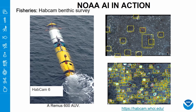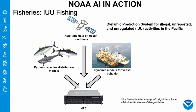Another example is the IUU fishing application — a dynamic prediction system for illegal, unreported, and unregulated activities in the Pacific. The objective is to use machine learning to identify nefarious vessel behavior across the Pacific as a function of suspicious AIS disabling, unauthorized transshipment, and overlap with protected or vulnerable shark and tuna species. The benefit here is to provide law enforcement with data on IUU fishing activities. There is a link for more information on this project.